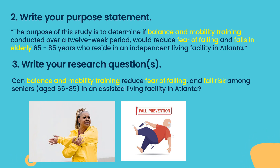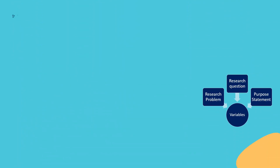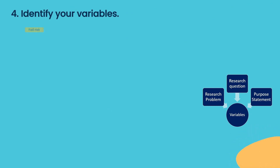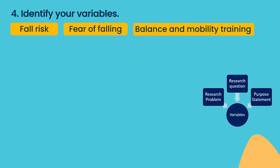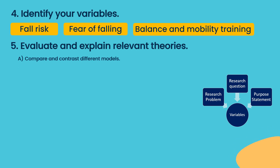Third, write your research questions: Can balance and mobility training reduce fear of falling and fall risk among seniors aged 65 to 85 in an assisted living facility in Atlanta? Fourth, identify your variables: fall risk, fear of falling, and balance and mobility training.